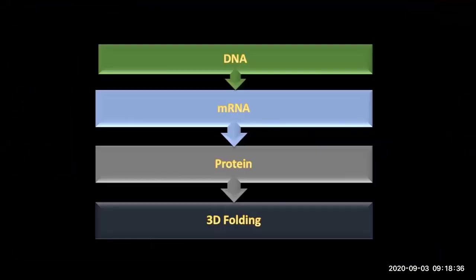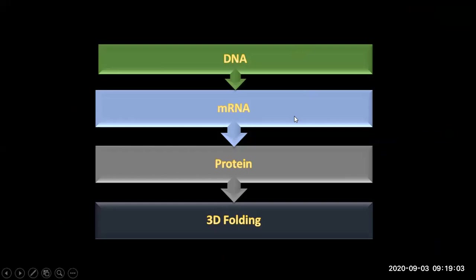I thought to make a flowchart to tell you how the message is converted into proteins. Basically the message is in DNA, and DNA is present in chromosomes inside the nucleus. This message is converted into messenger RNA, and that process is called transcription. The message is transcribed from DNA to messenger RNA, and as the name shows, it carries the message.